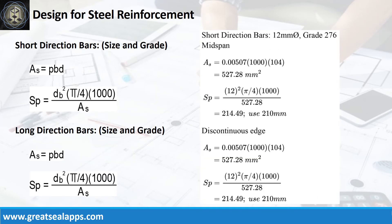At short direction, given mid-span and discontinuous edge, rho equals 0.00507. B equals 1,000 mm and D equals 104 mm. The area of steel for both sections is 527.28 square millimeters. And the spacing for 12 mm bar is 210 mm.